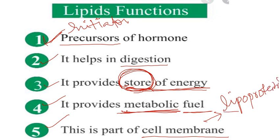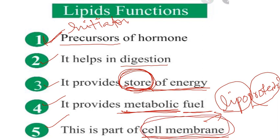Lipoproteins are formed when lipids and proteins are combined with the cell membrane. The composition of lipids combined with proteins is called lipoprotein lipids. These are all the functions of lipids and their role in biological systems. Students, if you have any questions, please ask in the comments. Thank you so much.